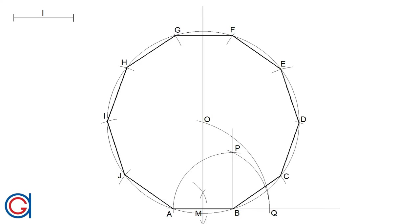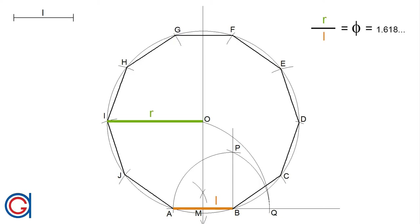Hello, today we are going to learn how to draw a regular decagon, or a ten-sided polygon, knowing the length of one side. This process is based on the ratio of the famous golden proportion — in other words, the ratio of the side of the decagon to the radius of the decagon is the same as the golden proportion.